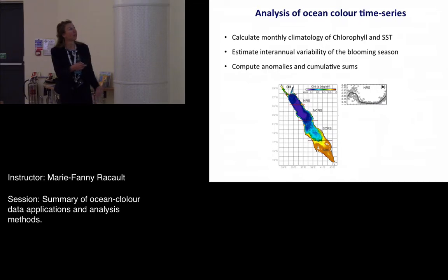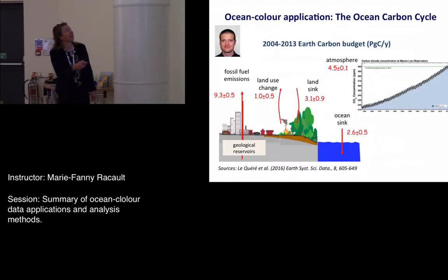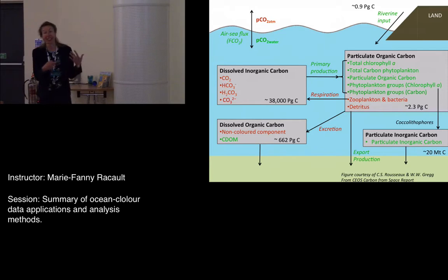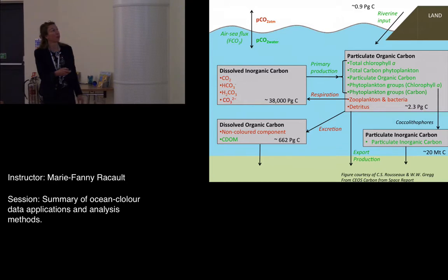These are very basic but powerful statistical and analytical toolsets used to characterize phytoplankton interannual variability. Then Bob introduced the ocean carbon cycle, putting everything into a broader context. He did a fantastic job going through each of the boxes on that slide, and gave an introduction to how ocean color products can provide information on the different carbon components of the ocean.